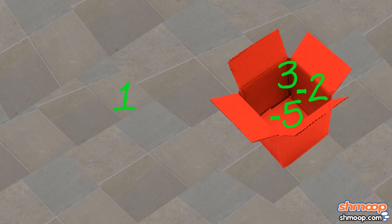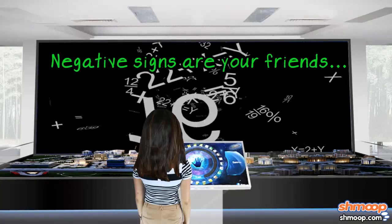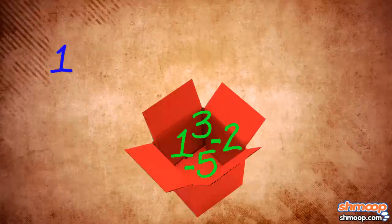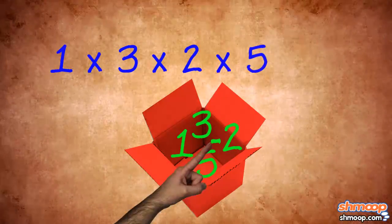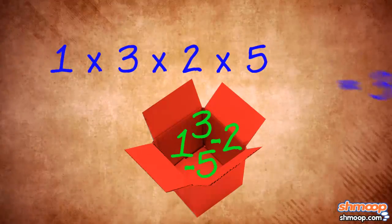In the red box, she finds a 1, a 3, a negative 2, and a negative 5. She racks her brain to try to recall what they told her in that five-minute training video. Oh, right. She multiplies the numbers together, first ignoring the negative signs. 1 times 3 times 2 times 5, in California anyway, is 30.